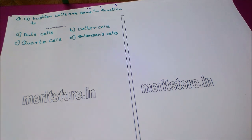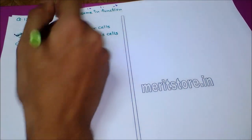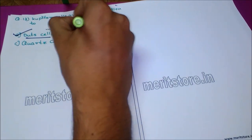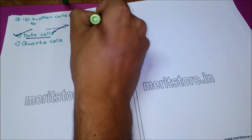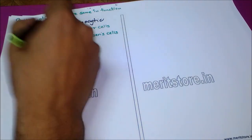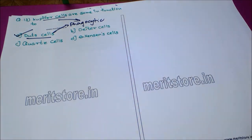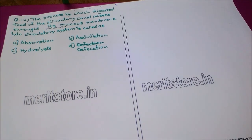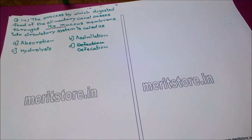The next question involves Kupffer cells, which are phagocytic — that is, they engulf and eat dead cells. Kupffer cells are found in the liver and are similar in function to dust cells, both being phagocytic cells that ingest dead material.